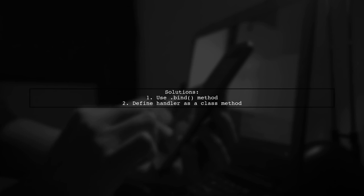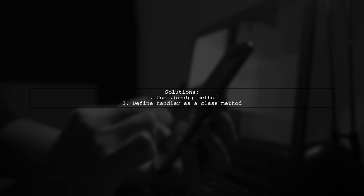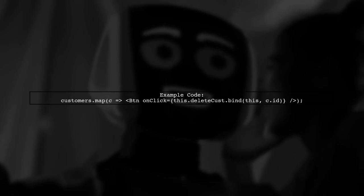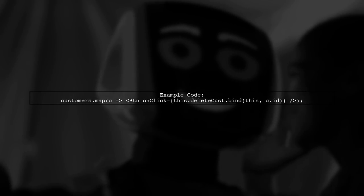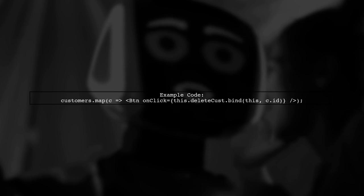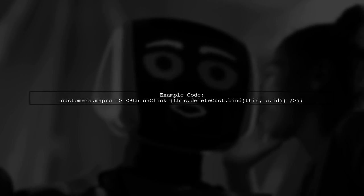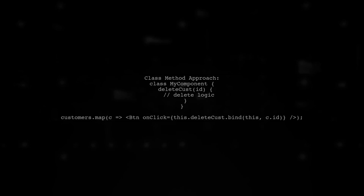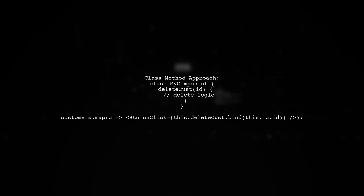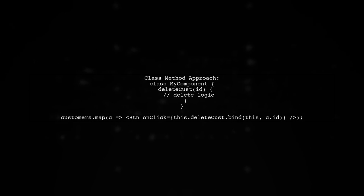To pass parameters to an event handler without using Lambdas, you can use the bind method or define the handler as a class method. For example, using the bind method, you can modify your code like this. Alternatively, you can define the deleteCust method in your class and call it directly, ensuring it receives the correct parameters.